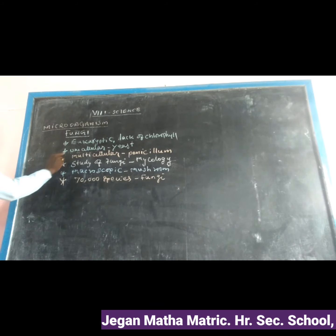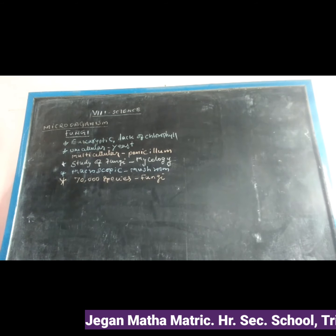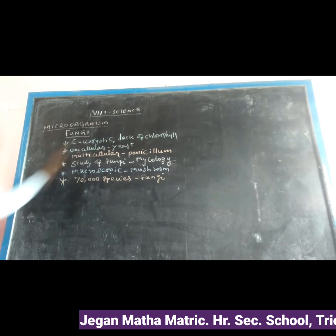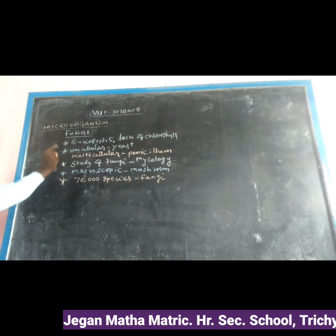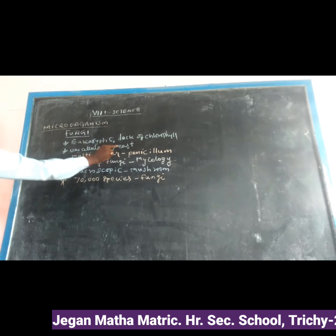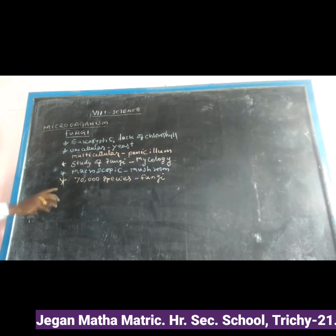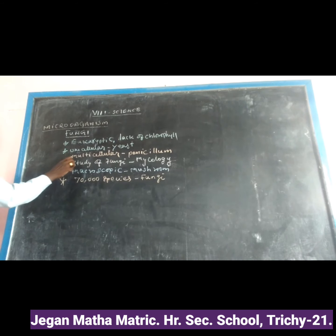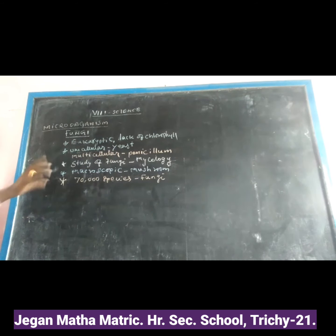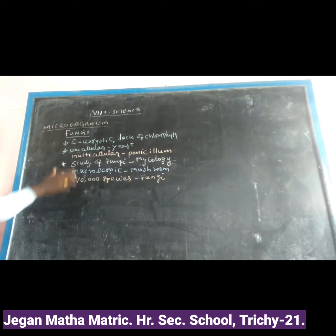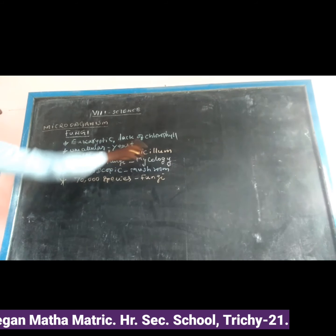The plant bodies of fungi can be unicellular — made up of only one cell — for example, yeast. Sometimes they are multicellular, meaning the plant body is made up of more than one cell, for example, Penicillium.